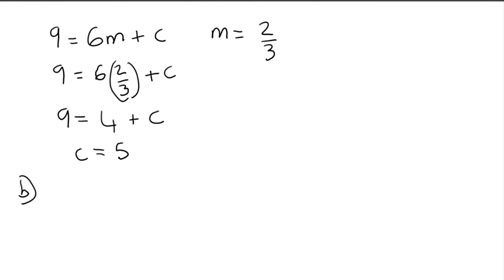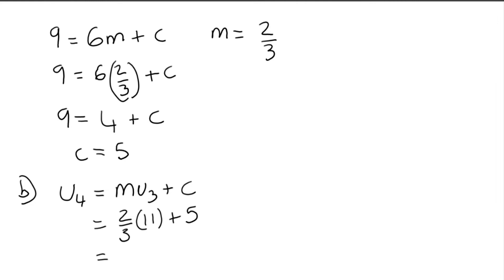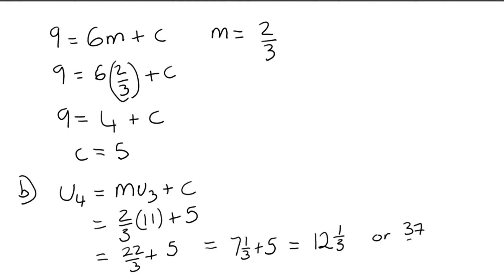Part 4b: calculate the fourth term of the sequence. u4 equals m times u3 plus c. We know m is 2 thirds, u3 is 11, and c is 5. So 2 times 11 is 22, giving 22 over 3 plus 5. 3 goes into 22 seven times remainder 1, so that's 7 and 1 third plus 5, which is 12 and 1 third. Alternatively written as 37 over 3. The answer for 4b is 12 and 1 third.